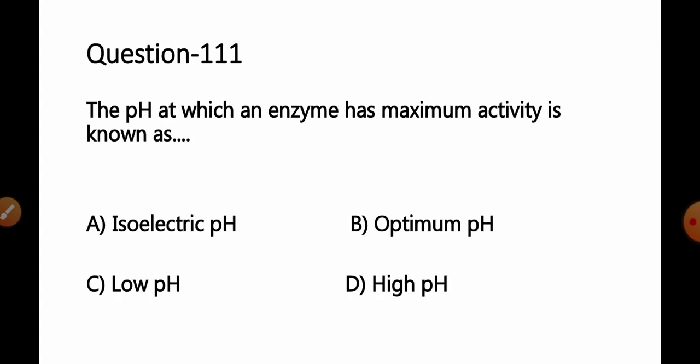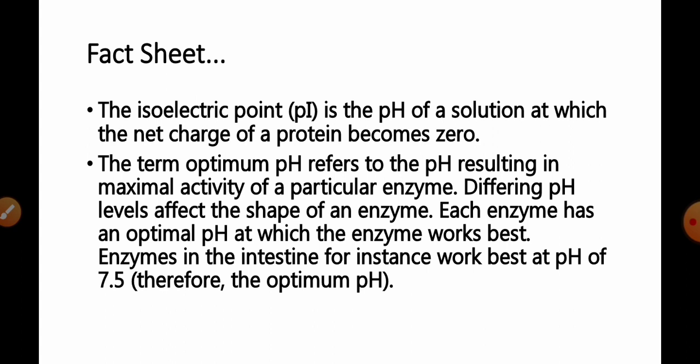Move to the next. Question number 111. The pH at which the enzyme has maximum activity is known as option A. Isoelectric pH. B. Optimum pH. C. Low pH. D. High pH. Fact available for this question: Here, you have to understand the two terms that is isoelectric pH and optimum pH.